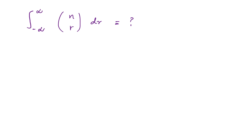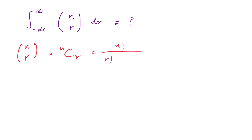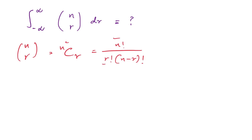n choose r — as I remember when we learn in grade 12 pure mathematics — appears in textbooks as nCr. We know this is equal to n factorial over r factorial times (n minus r) factorial.